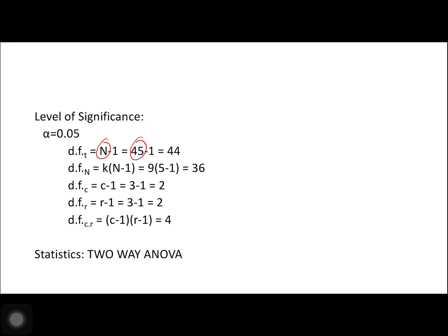For the degrees of freedom total, the total number of values is 45 minus 1, giving 44. The degrees of freedom within is K times (N minus 1): we have 9 groups times 5 per group minus 1, equal to 36. For degrees of freedom column (factor A, instructor), that is C minus 1: 3 minus 1 equals 2. For degrees of freedom row (factor B, method of teaching): 3 minus 1 equals 2. For the interaction (A by B): (columns minus 1) times (rows minus 1) equals 2 times 2, which is 4.